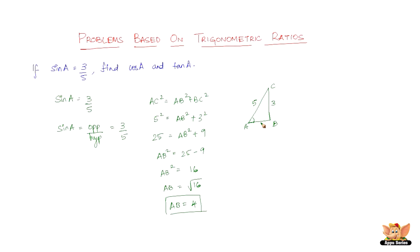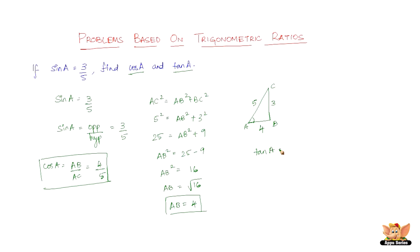AB is found to be 4 using the Pythagorean theorem. Now that we have the adjacent side with respect to A, we can find cos A and tan A. Cos A equals adjacent by hypotenuse, which is AB by AC = 4 by 5. Tan A equals opposite by adjacent, which is BC by AB = 3 by 4.